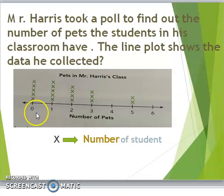When we see a mark above a number, it tells us how many times that number occurs. For example, we can see that above the number 2, we have 4 x's. 1, 2, 3, 4, which means there are 4 students that have 2 pets.